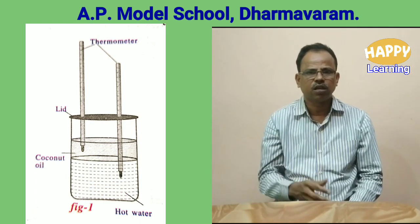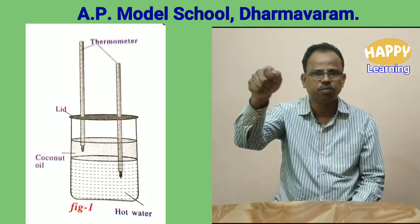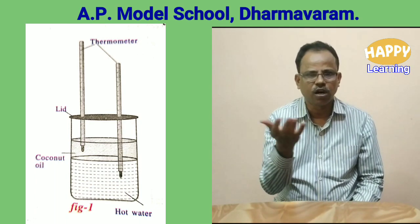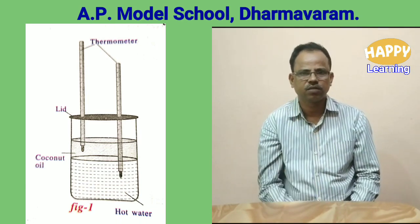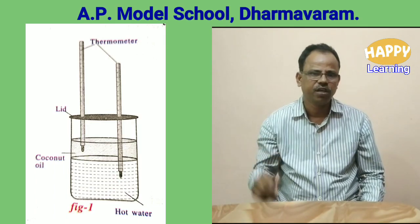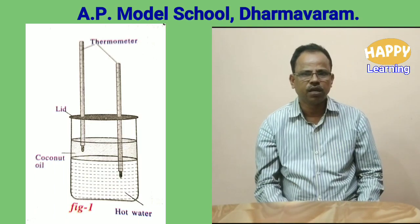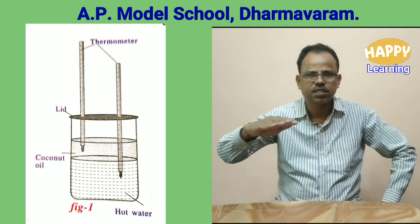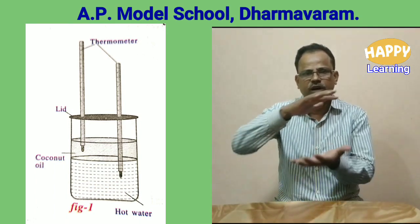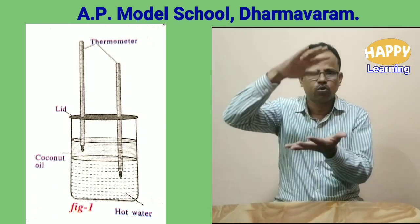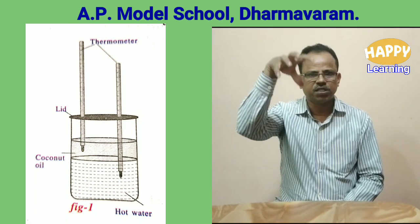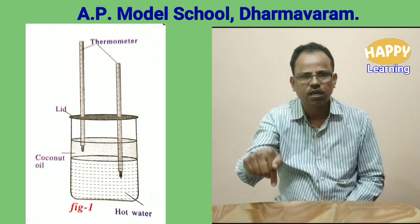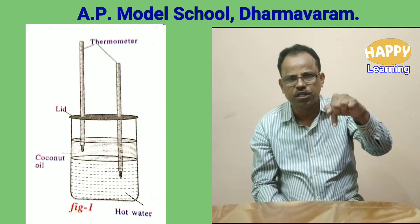First, hot water at roughly 60 to 70 degrees Celsius is poured into this glass jar. Next, slowly and carefully pour the coconut oil along the walls of the container so that it settles on top of the water. So water is at the bottom and coconut oil is at the top — there are two layers. Now place the lid with two thermometers. One thermometer bulb is inside the water and the other thermometer bulb is in the coconut oil.